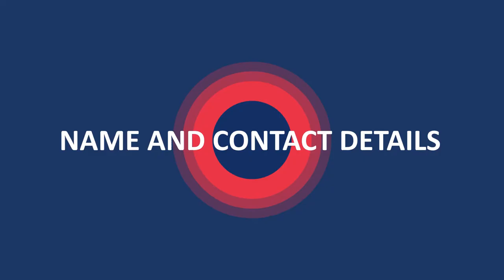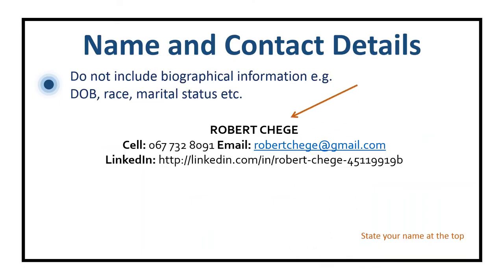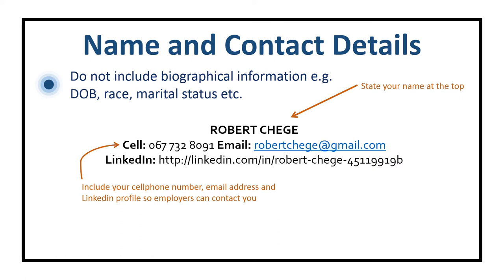You actually don't use 'name and contact details' as a heading. Your CV should start with your name at the top. Use the name you are best known as, but no nicknames. You don't have to put all the names you have on your ID document — just your first name and surname. All that is then needed are details of how to get hold of you: your cell number and your email address. You can also include your LinkedIn profile address or your online portfolio. Street addresses are not required.